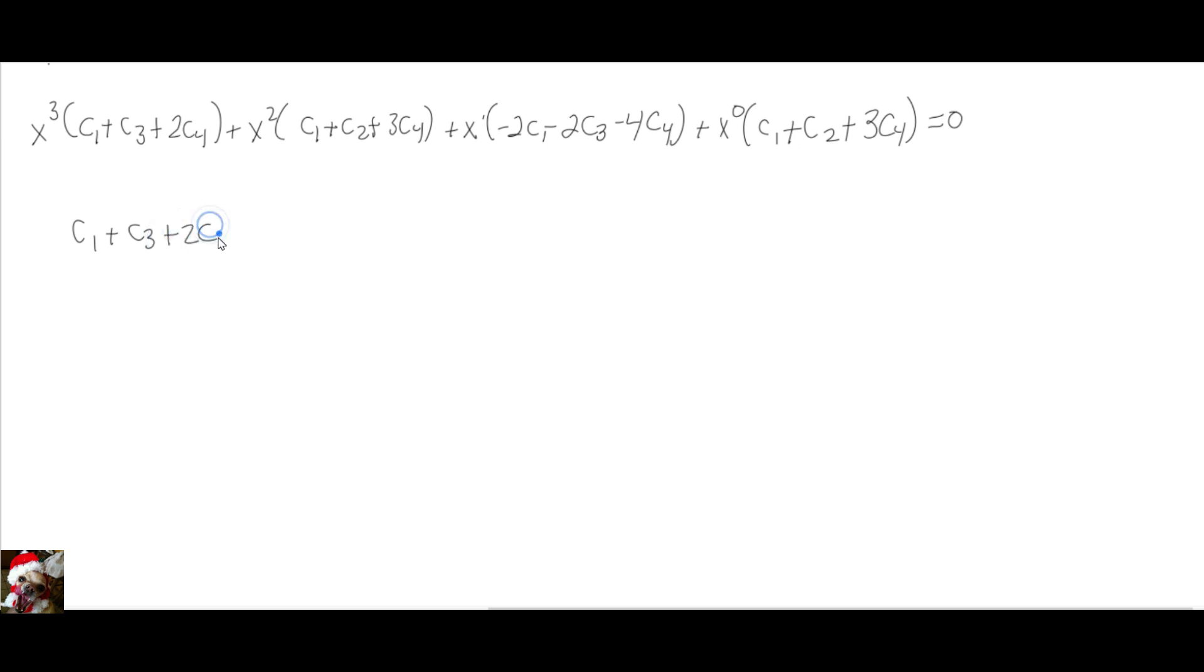So I'm writing that down. C1 plus C3 plus 2C4 equals 0. C1 plus C2 plus 3C4 equals 0. Minus 2C1 minus 2C3 minus 4C4 equals 0. C1 plus C2 plus 3C4 equals 0.